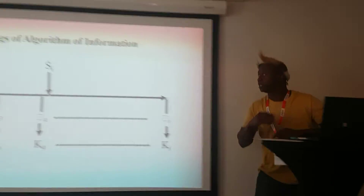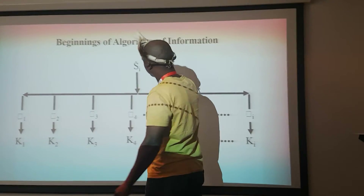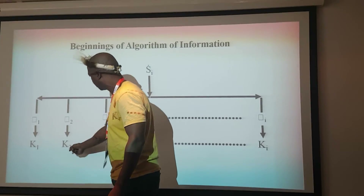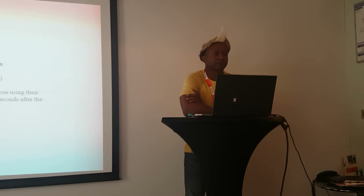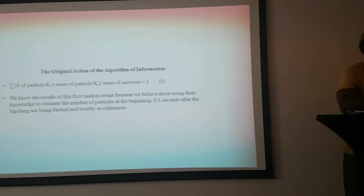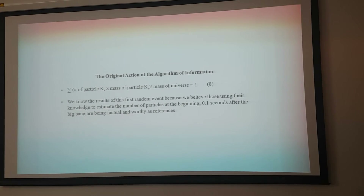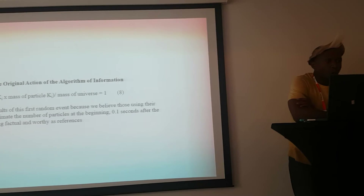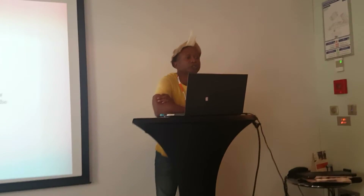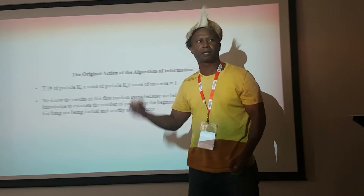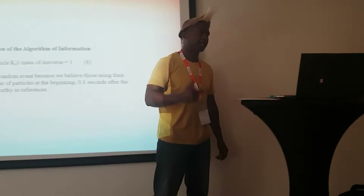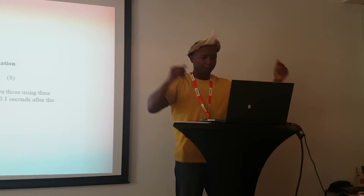The beginnings of the algorithm of information will have a character Xi, with probabilities P1, P2, P3, P4, Pi. Probability: Xi becomes particle K1, P2 becomes particle K2, Pi becomes particle Ki. The original action of the algorithm is that the summation of particles Ki times the mass of Ki over the mass of the universe equals one. We know the results of the first event — 0.1 seconds after the Big Bang, how many neutrinos, quarks, and bosons there were. So we know the very first action of the algorithm of information directly.